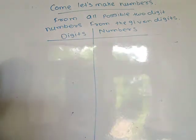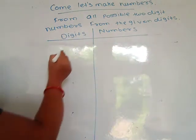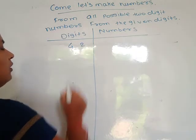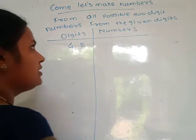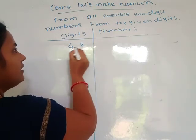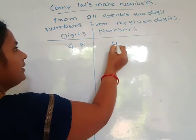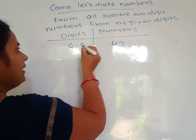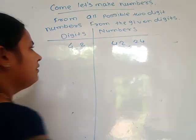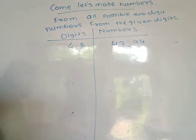Here digits given are 4 and 2. By using these digits you write the numbers: the first number is 42 and the second number is 24.